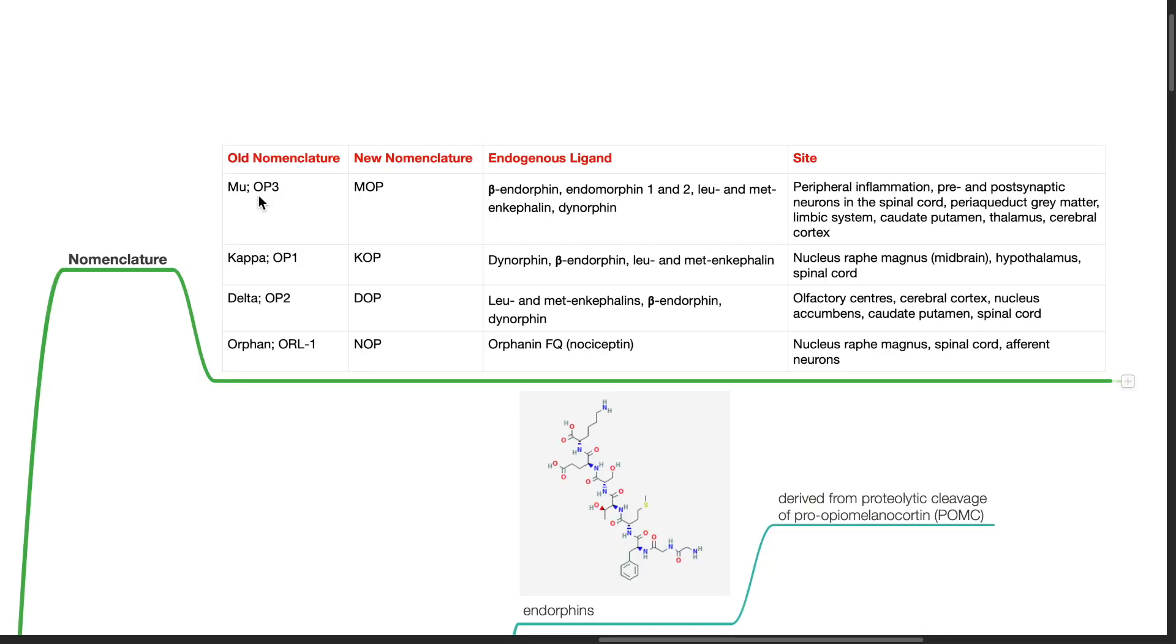Nomenclature: The new nomenclature for the MU or OP3 receptor is MOP. Endogenous ligands are beta-endorphin, endomorphin 1 and 2, leucine and methionine enkephalin, and dynorphin. MOP receptors are located peripherally at sites of inflammation, pre- and post-synaptic neurons in the spinal cord, periaqueductal gray matter, limbic system, caudate putamen, thalamus, and cerebral cortex.